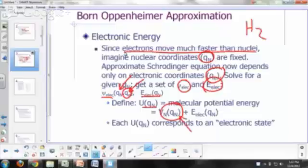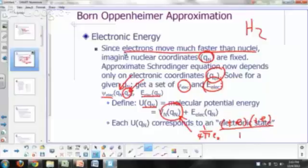One over four pi epsilon naught, charge of one nucleus is positive E, charge of the other nucleus is positive E divided by R, the distance between the two nuclei. If R is the distance between the two nuclei of an H2 molecule, this would be your potential energy for the interaction between the nuclei. Now, if you have more than two nuclei, then you have to sum it over all the possible pairings.